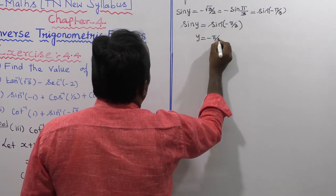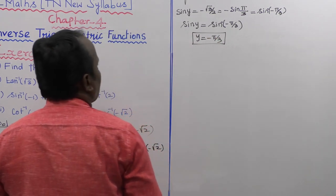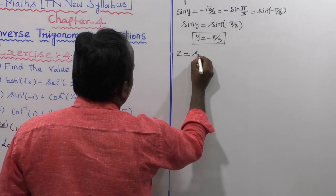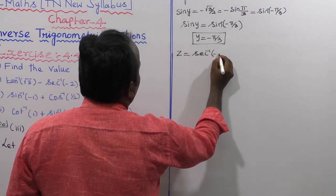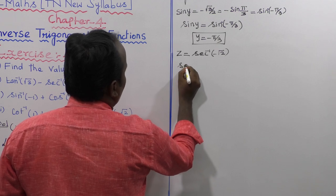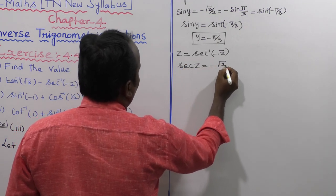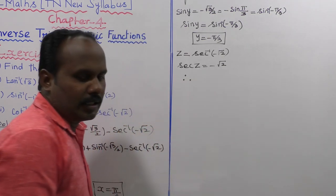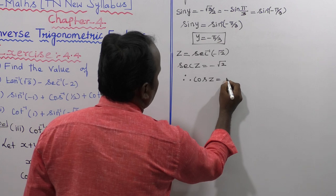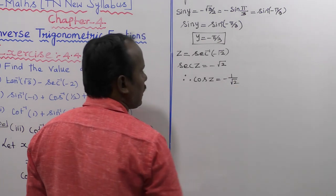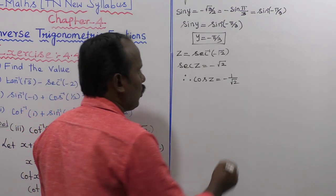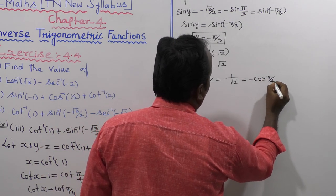So sin y equals sin of minus pi by 3, therefore y is equal to minus pi by 3. Now for the third term: z is equal to secant inverse of minus root 2. Moving secant to the left side, sec z equals minus root 2, so cos z is equal to minus 1 by root 2. Since 1 by root 2 corresponds to pi by 4, we have cos z equal to minus cos pi by 4.